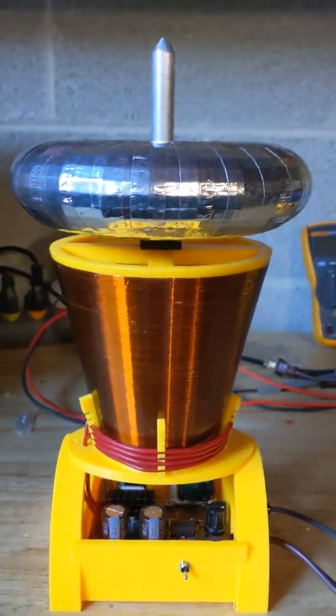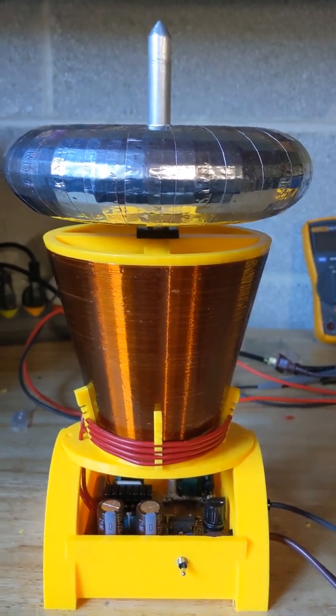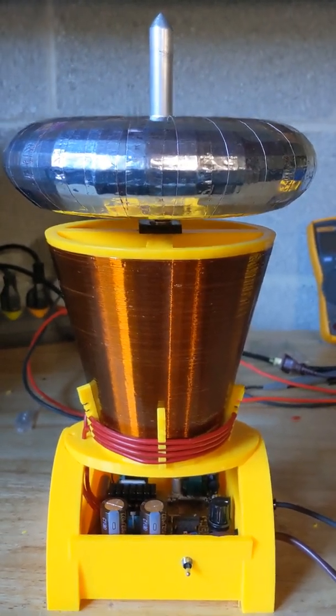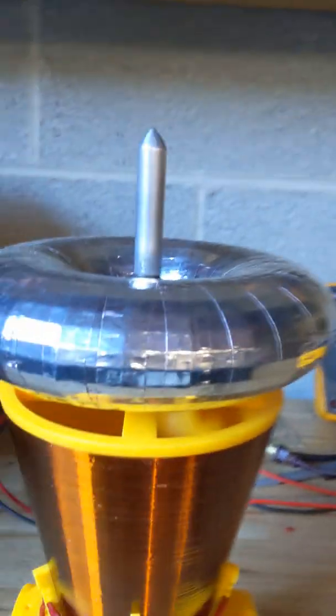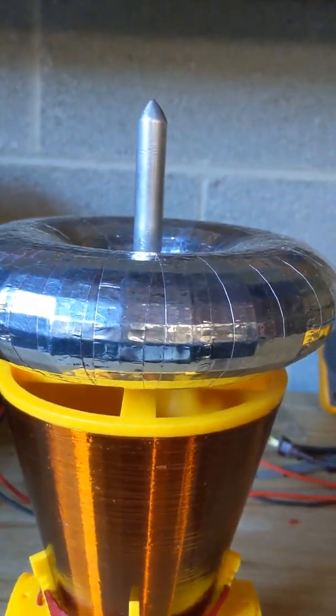This is a simple half-bridge non-resonant primary Tesla coil. It's made out of all 3D printed forms. The toroid which is wrapped in aluminum tape is 3D printed.